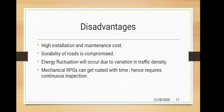Energy fluctuation also occurs since the traffic density of roads varies in each state and every country, causing energy variation. Mechanical RPGs can rust with time, hence require continuous inspection. This is the most common disadvantage with mechanical RPGs.